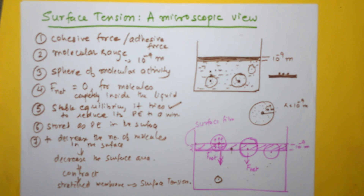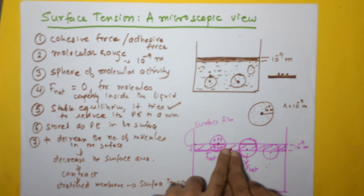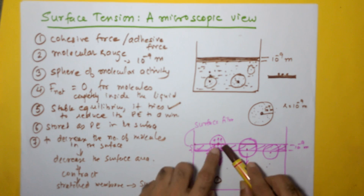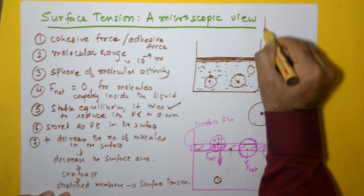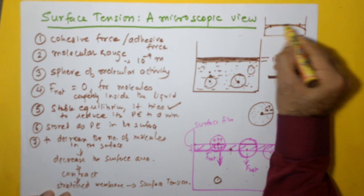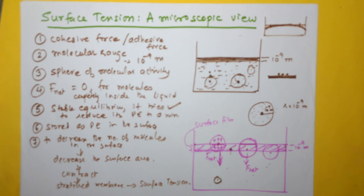Let us recap: the surface film has high potential energy compared to the liquid inside. It tries to reach a state of minimum potential energy. To do that, it decreases the number of molecules in the surface film by decreasing the surface area — it contracts and stretches. Therefore, the surface looks like a stretched membrane, and that is what we observe as surface tension on the surface of the liquid.